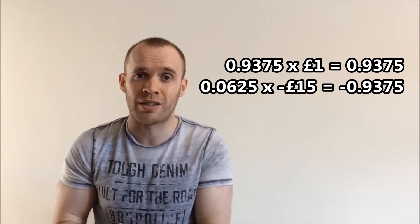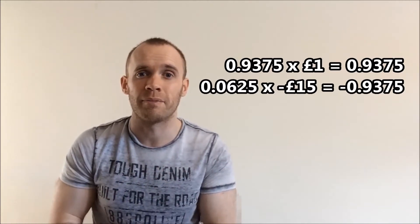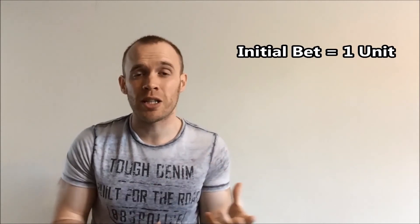This is called the martingale system and it's often used to bet on red or black on a roulette wheel. If you have enough money to double your bet seven times, then there's less than one percent chance of you losing. Trouble is, if you do lose, you lose big and the wins are very small by comparison.